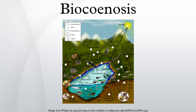Based on the concept of biocoenosis, ecological communities can take in various forms: zoocoenosis for the faunal community, phytocoenosis for the flora community, and microbiocoenosis for the microbial community.